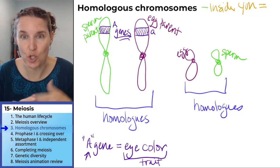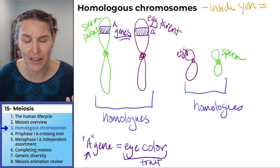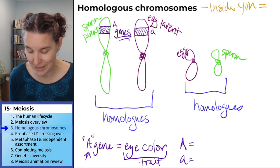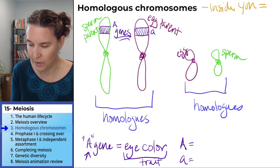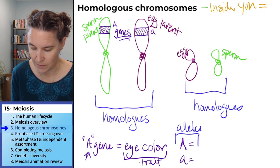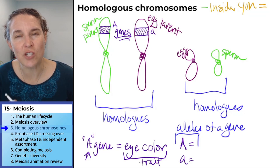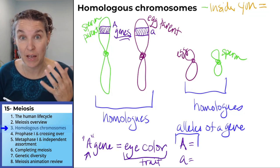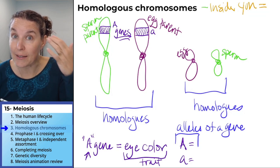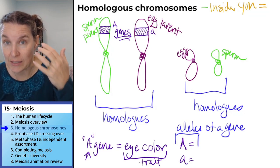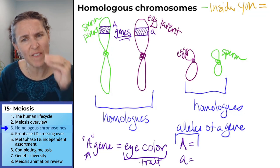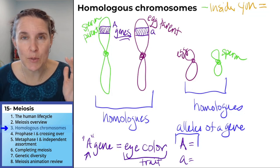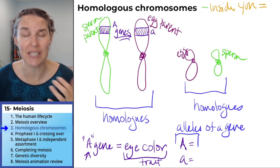Do you have different forms of the eye color gene? Yes — you can have big A or little a. These are alleles of a gene. You can have blue-eyed alleles and brown-eyed alleles — different forms of the gene that codes for a trait. It is about a million times more complicated. Heredity in humans is absurdly complicated, and traits are not coded for by just one gene.